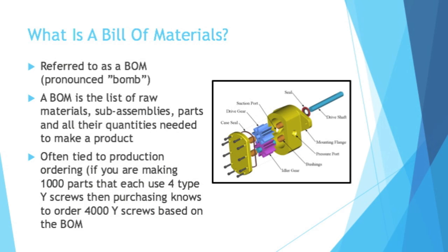A BOM is the list of raw materials, subassemblies, or parts that are sourced through a supplier, and all the quantities of those things needed to make a product. It's often tied to production ordering. Purchasing needs to know if you need a certain amount of parts — they can get that off of the BOM.